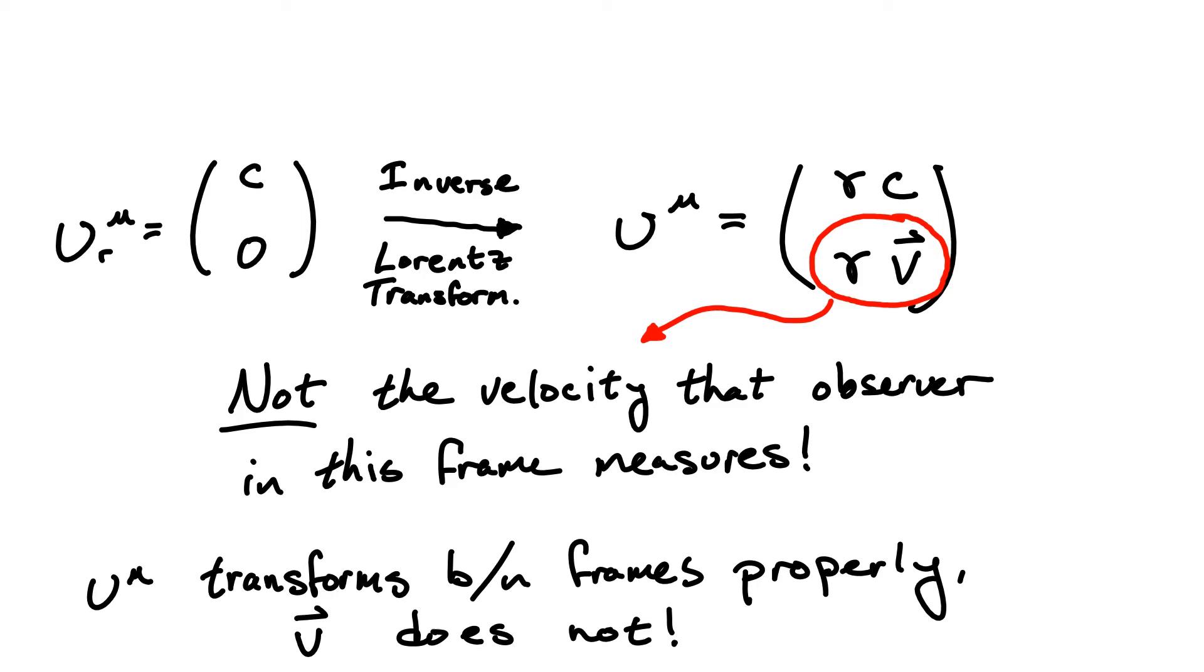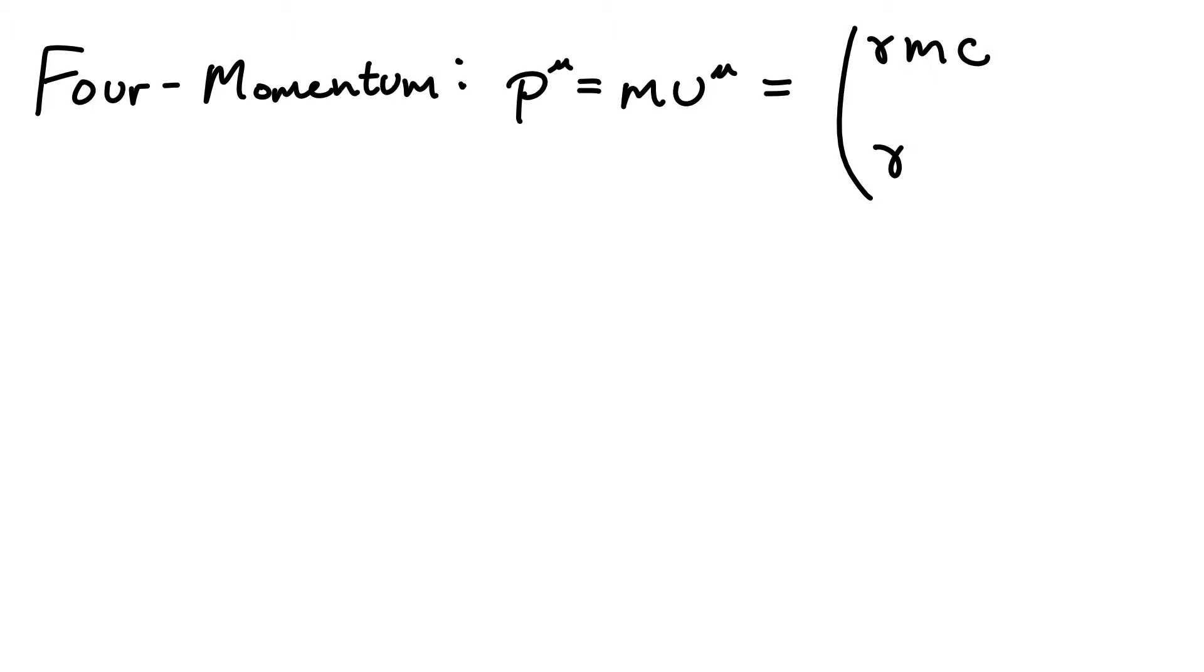We can finally get our 4-momentum by simply multiplying this by the mass of the particle to get this expression here. It should be noted that you will sometimes see this expression written in terms of the so-called relativistic mass, where the factor of gamma is absorbed into the definition of the mass of the particle. While this gives the 4-momentum the same form as we would see in Newtonian mechanics, I personally find it a bit confusing to talk about two different masses, one of which is frame-dependent. So instead, whenever I refer to the mass, I will always be talking about the honest-to-goodness rest mass of the particle, or the mass that would be measured in the frame where the particle isn't moving.